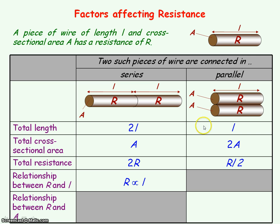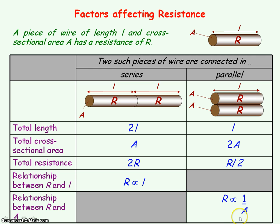So by keeping the length the same but doubling the cross-sectional area, we've halved the resistance. The relationship between resistance and cross-sectional area is therefore inversely proportional — R is proportional to 1 over A, meaning R is inversely proportional to A.